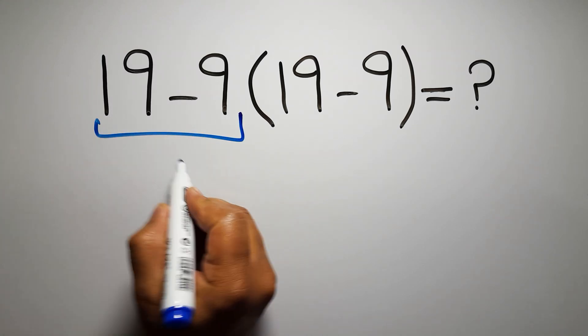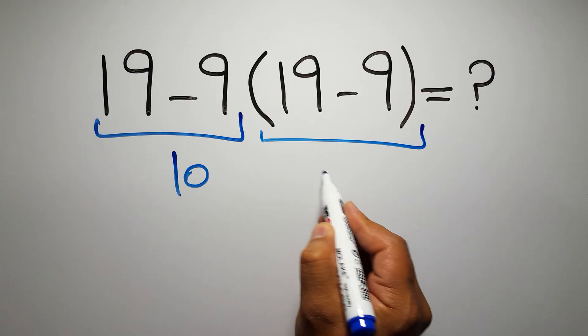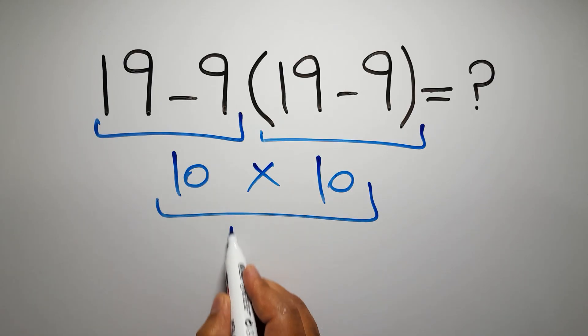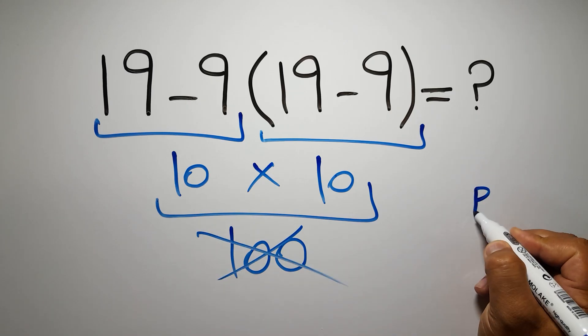19 minus 9 gives us 10, and again here we have 19 minus 9, so 10 times 10 which equals 100. But this answer is not correct because according to the order of operations, first we have to do parentheses.